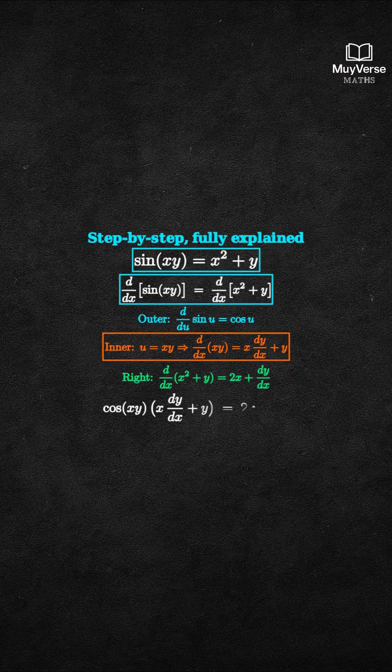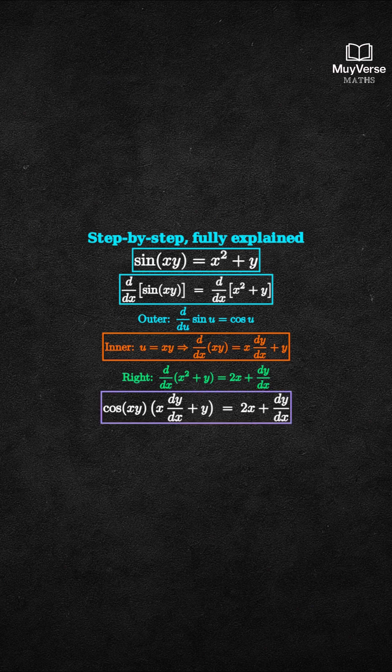Putting this together gives cosine of xy times the quantity x dy/dx plus y equals 2x plus dy/dx.